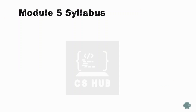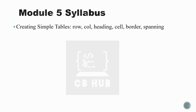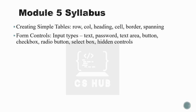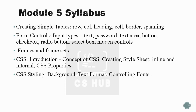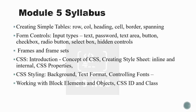We are currently at the fifth module, the last module. The syllabus covers: creating simple tables with rows, columns, headings, cells, borders, and spanning; form controls with input types like text, password, textarea, button, checkbox, radio button, select box, and hidden controls; frames and framesets; CSS — cascading style sheets — including inline and internal style sheets, CSS properties, styling background, text formatting, controlling fonts, block elements, and CSS ID and class.